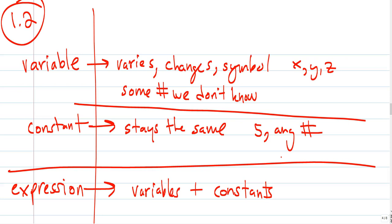1.2, go ahead and start copying this down. 1.2 starts us with some definitions. So the idea is that you need to know what a variable is. Well, a variable, literally, you can go to the meaning of the word.